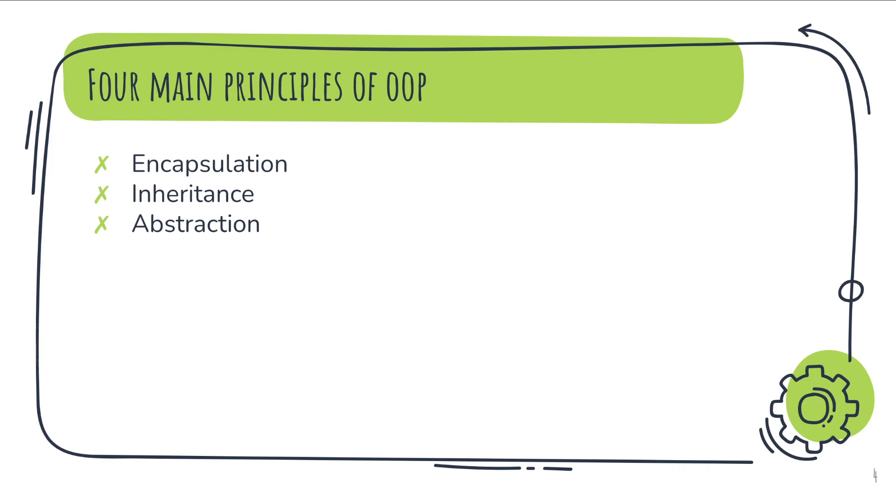The last principle is polymorphism. Polymorphism means we will design the classes in a way that we can reuse the same function to achieve different behaviors in different classes.